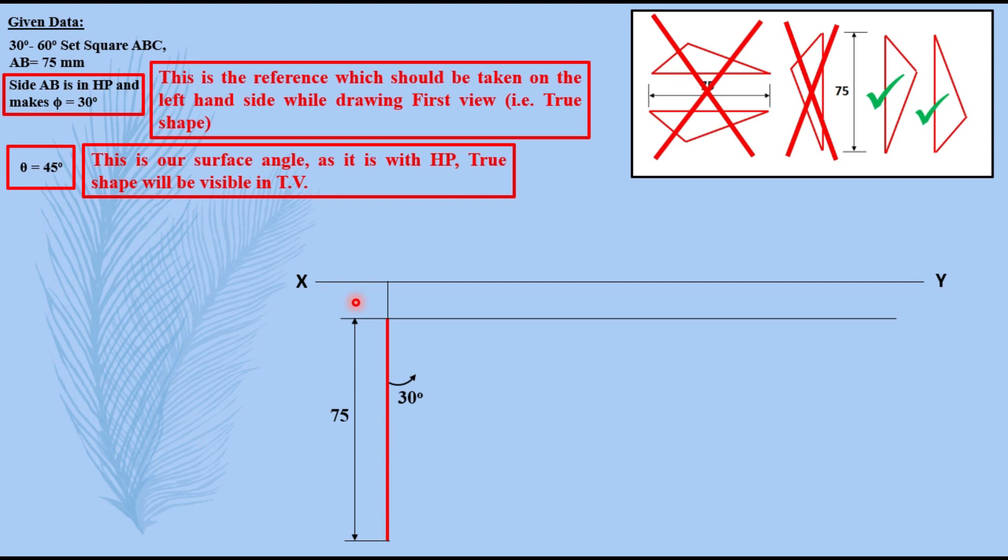Then 30 degree 60 degree is given to us. So I am taking 30 degrees drawing a line, 60 degrees from this side drawing another line, completing this triangle naming it ABC.